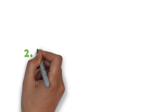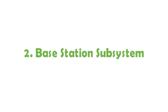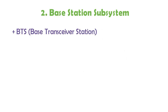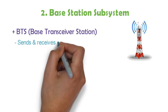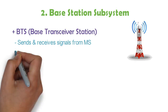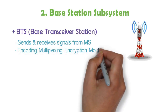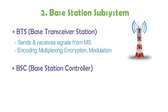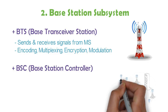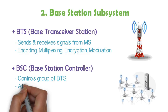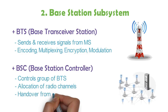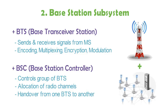The second subsystem is the Base Station Subsystem, which contains two components. The Base Transceiver Station (BTS) is essentially the mobile tower — it sends and receives signals from mobile phones and performs functions like encoding, multiplexing, modulation, and encryption. The Base Station Controller (BSC) controls a group of BTSs, allocates radio signals, and manages handover from one BTS to another.